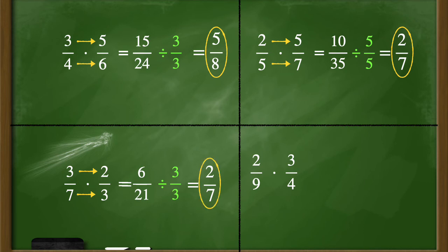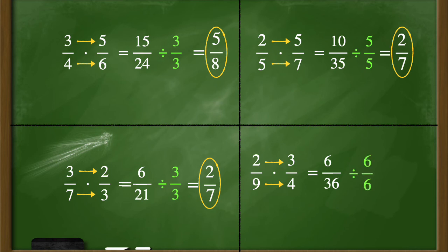One more. Multiply the numerators: two times three is six. Multiply the denominators: nine times four is thirty-six. Six and thirty-six share a common factor of six, so six divided by six is one, and thirty-six divided by six is six. My simplified answer to two-ninths times three-fourths is one-sixth. Again, when you're looking at a pair of fractions, you just follow those three easy steps and you will get a correct answer every time.